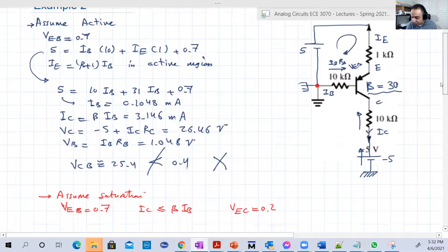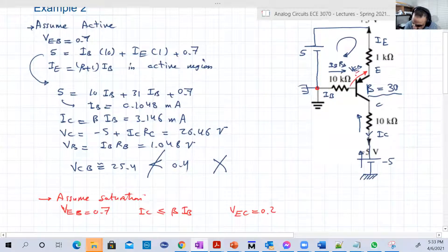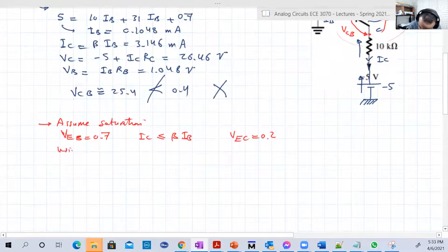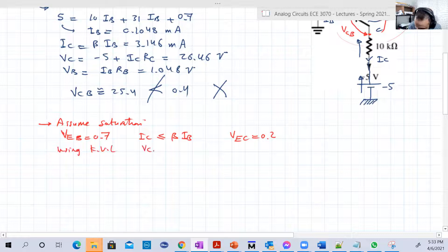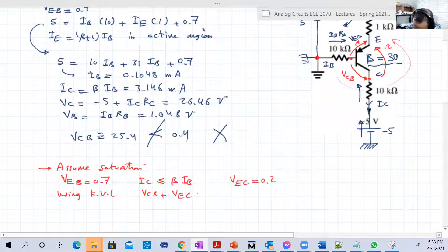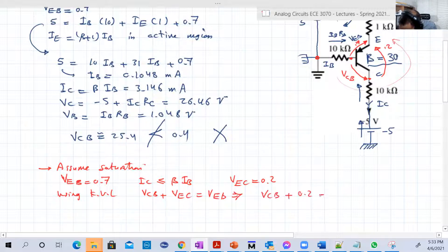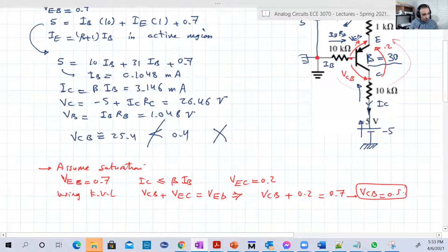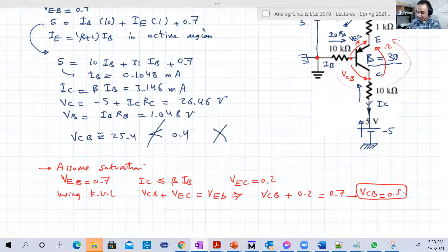This is a course. So here is VEB, 0.7, it's known. Here is VEC, it's 0.2, it's known. So can we calculate VBC, or VCB, I'm sorry. This is base, this is collector, VCB. Yes, you can. Just make a Kirchhoff like this.